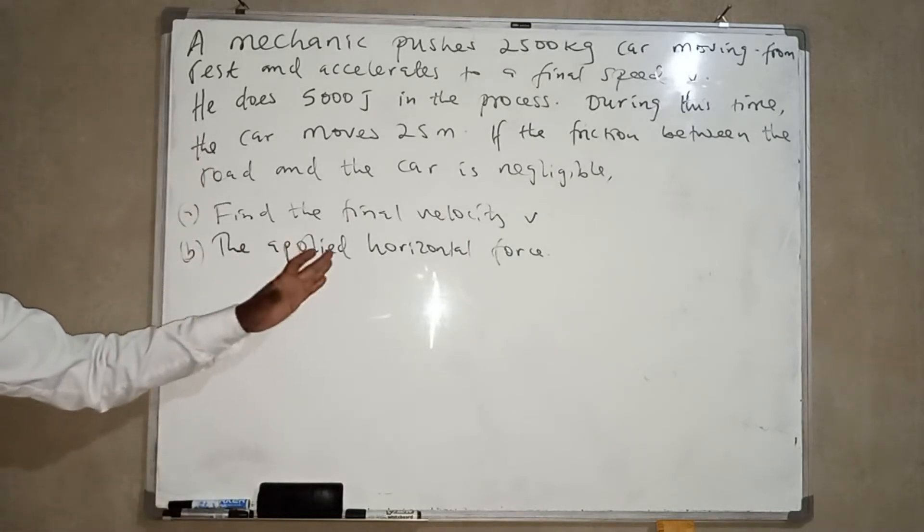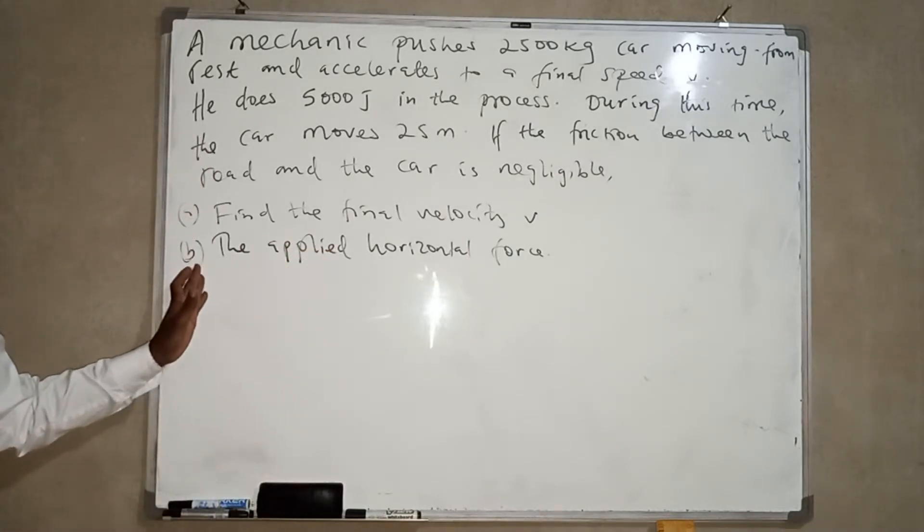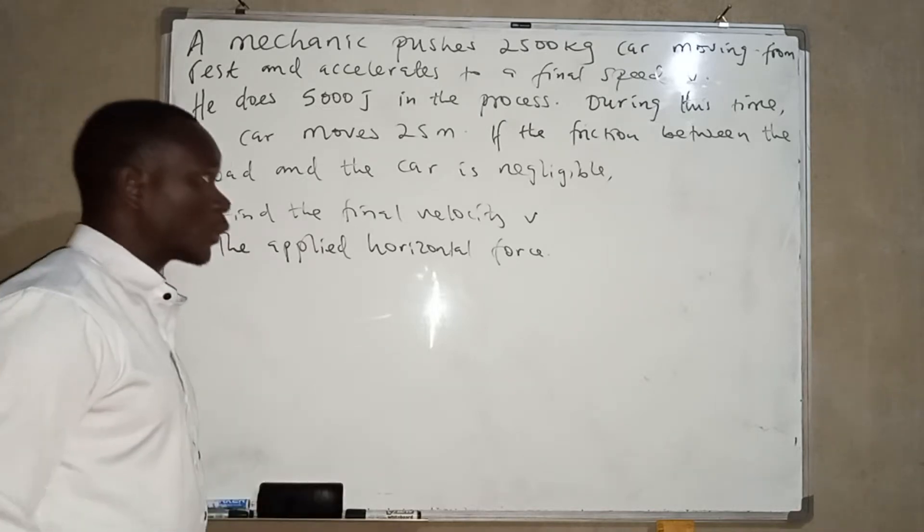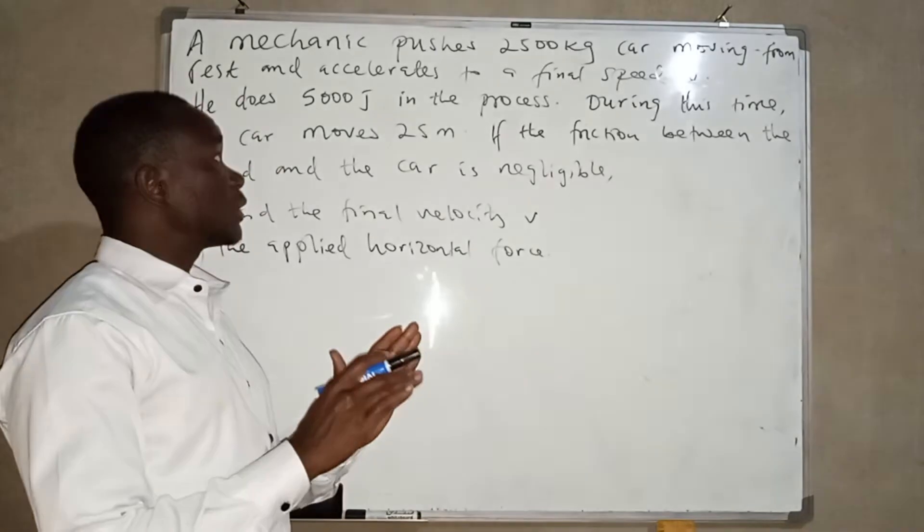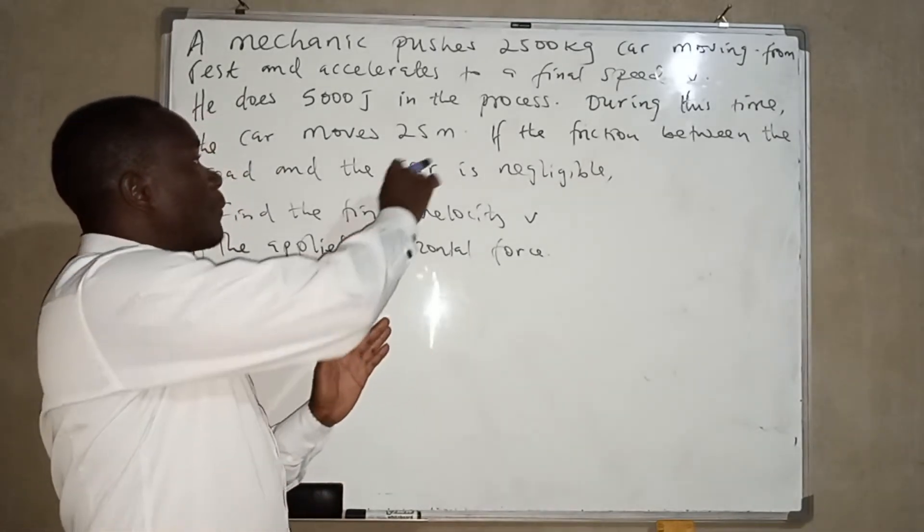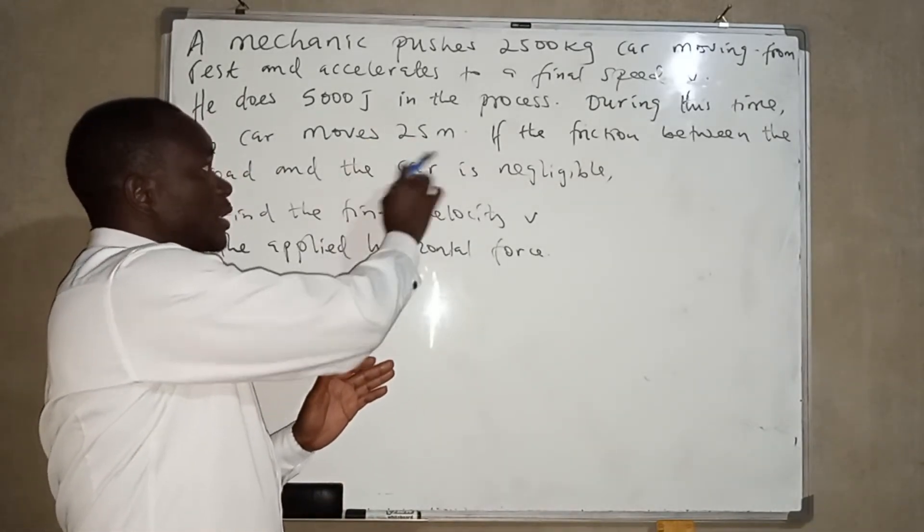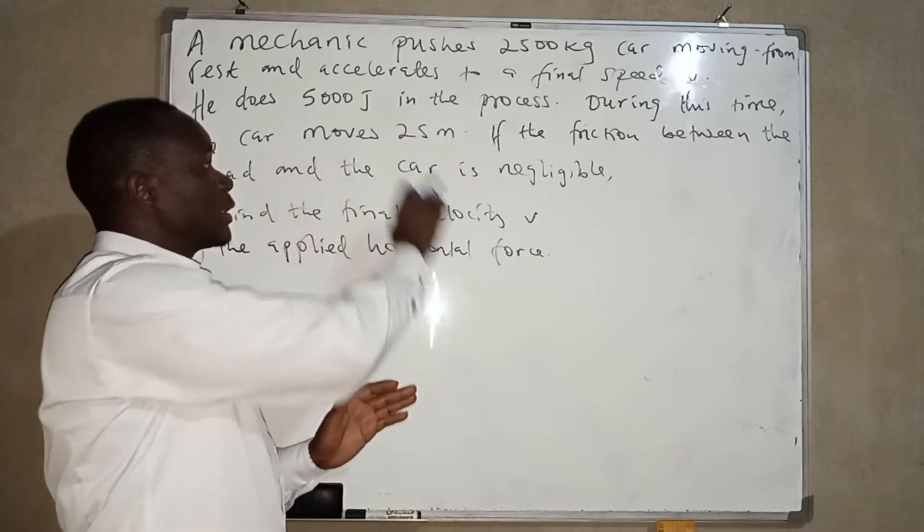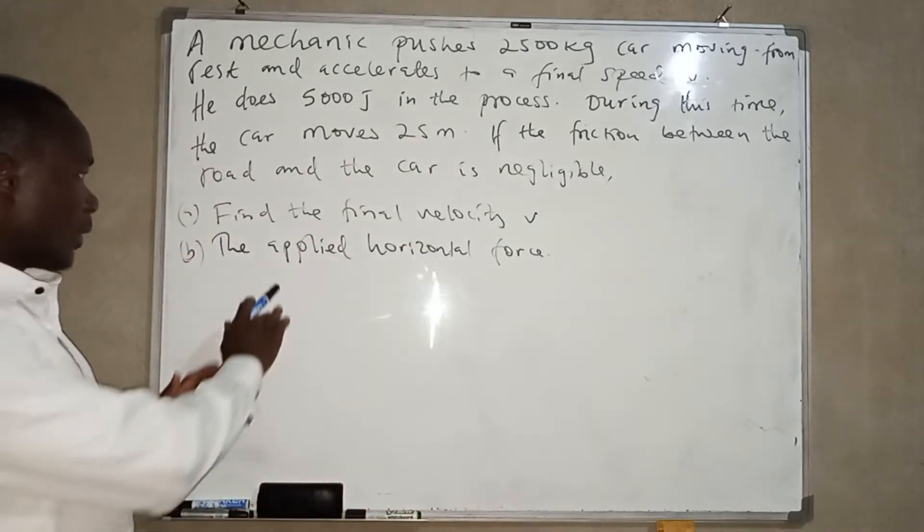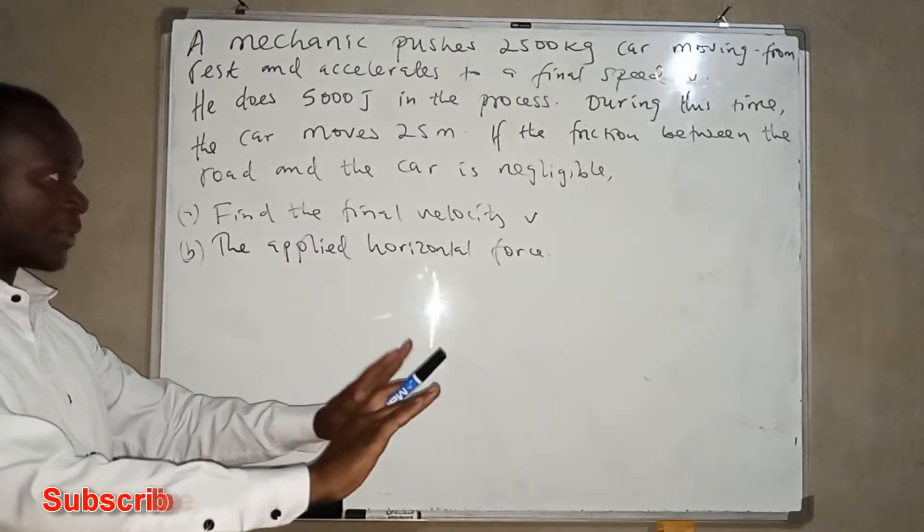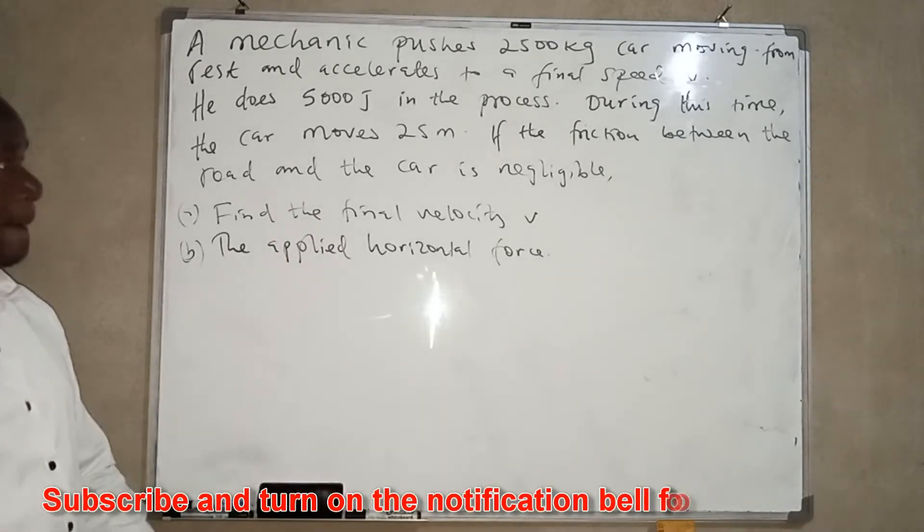If the friction force between the road and the car is negligible, A, find the final velocity, and B, the applied horizontal force. So we are trying to find the velocity, the final velocity that is reached when the car moves this distance or this displacement, and also the horizontal force that is applied as he pushes the vehicle.